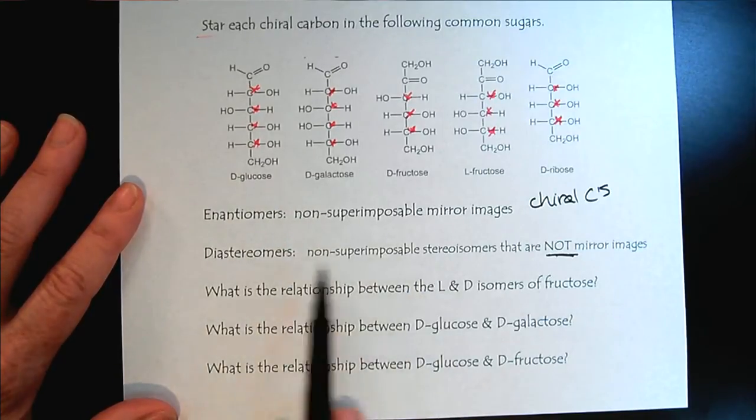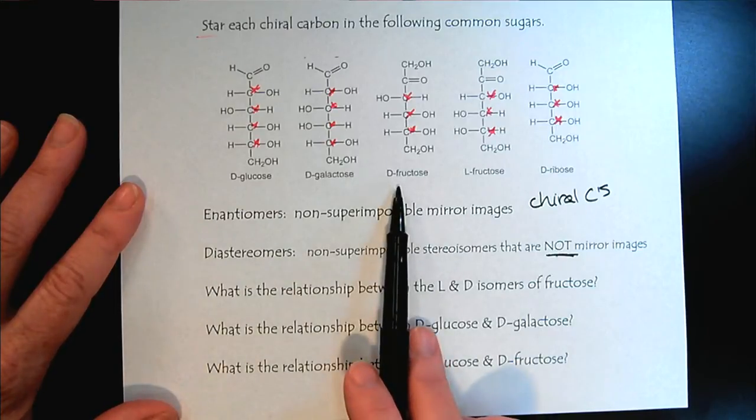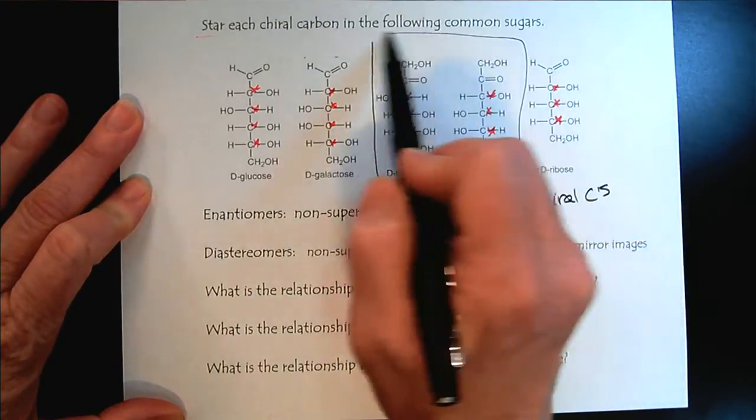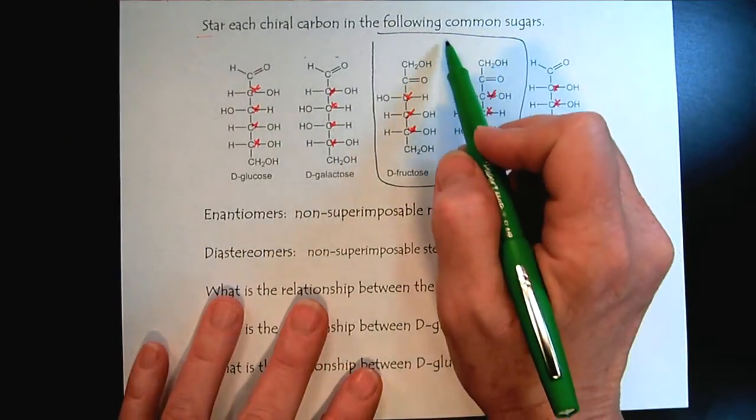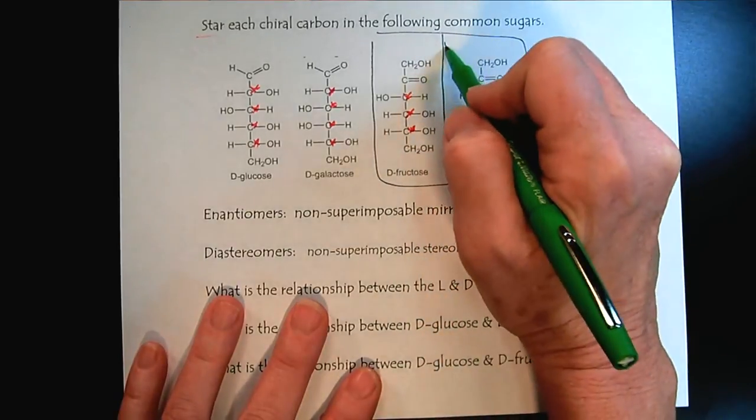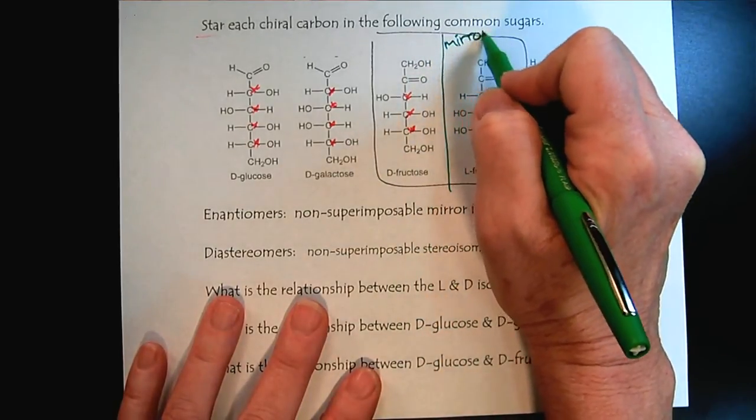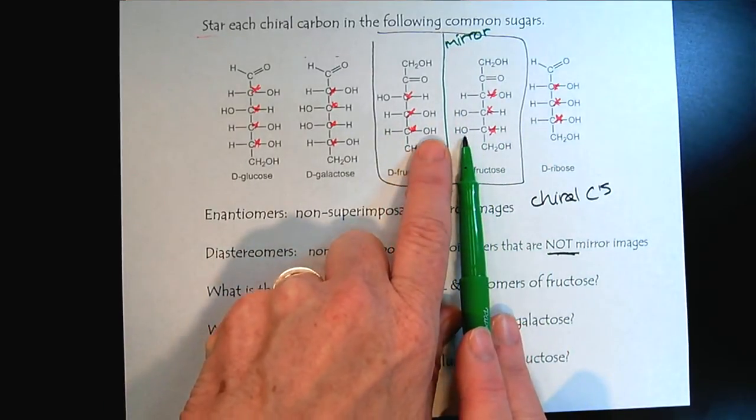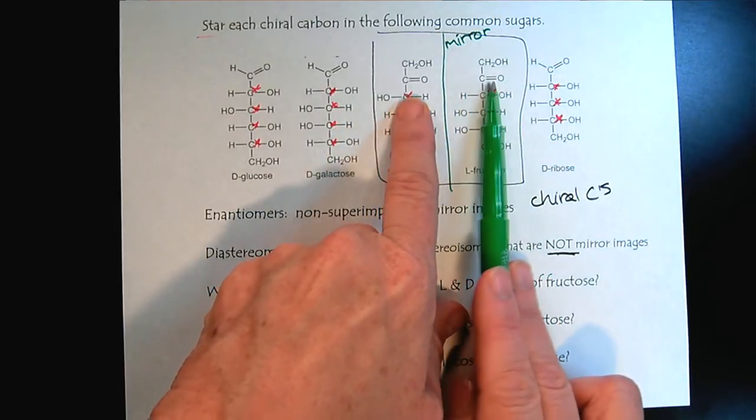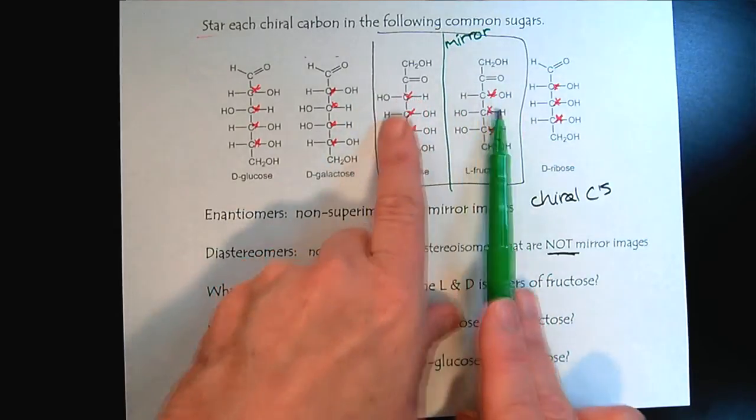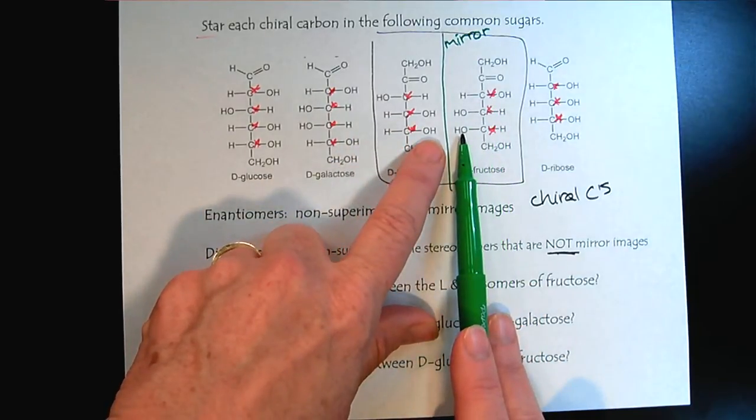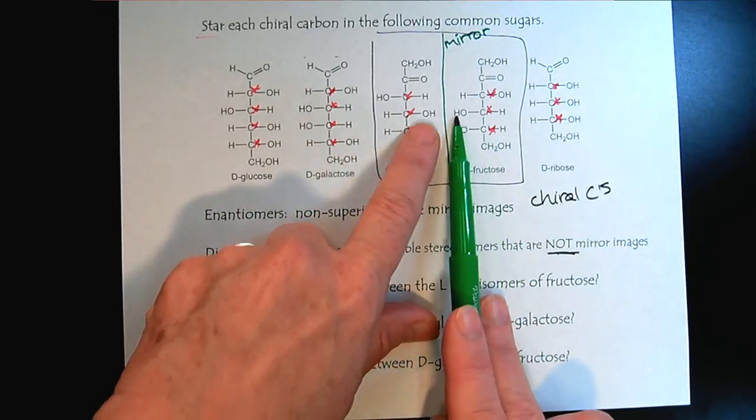So first let's look at the word enantiomers. So when we look at D-fructose and L-fructose, if we look right here, notice that if we put a mirror, that we look here, so there we have the reflection and the reflection and the reflection, and this could rotate so we could make it perfect, but we're really focusing only on the chiral carbons. So we see for all of the chiral carbons that we have the mirror image.